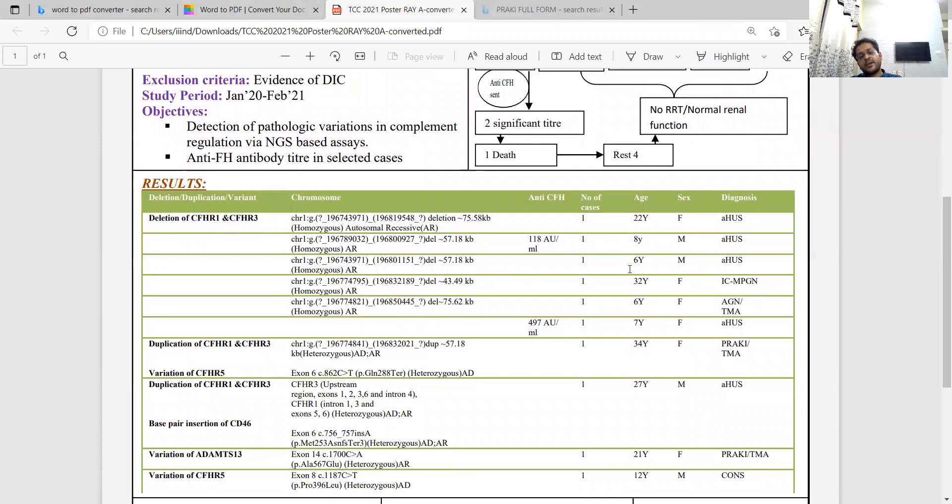What we found was the homozygous deletion of CFHR1 and 3 in five of the ten positive cases, followed by duplication of the same in two of them. One atypical HUS patient was suffering from base pair insertion at CFH46. The patient with TMA on renal biopsy had a mutation of ADAMTS13 gene. The C3GN patient was suffering from mutation of CFHR5. The anti-CFH antibody titers were positive in two of our patients.